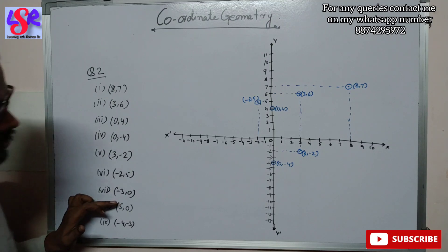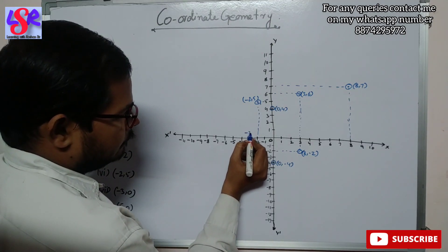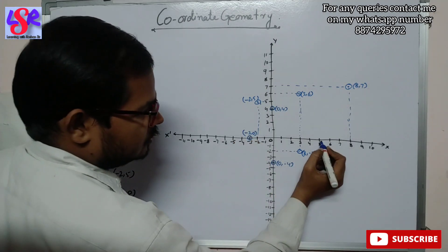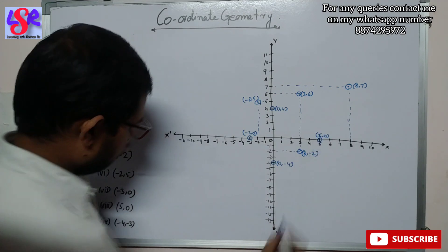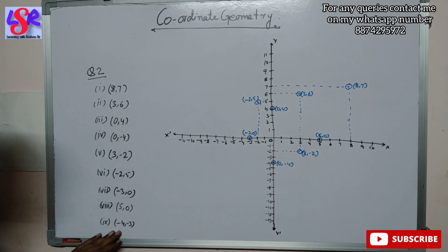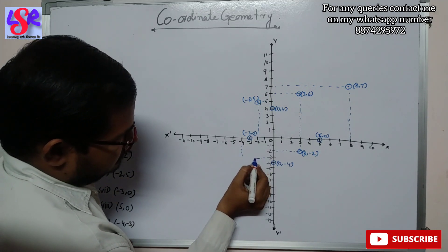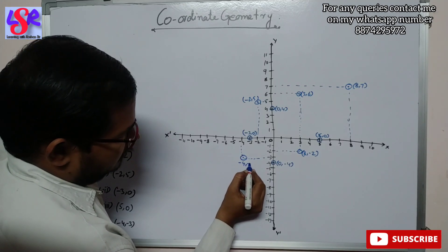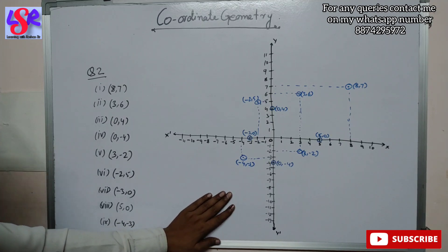Then the next point is minus 3 comma 0, so minus 3 comma 0 will be plotted over here on the negative x axis. Then we have 5 comma 0, so 5 comma 0 will be plotted on the positive x axis. The next one is minus 4 comma minus 3 — both of them are negative, so it will be in the third quadrant — and here we get the point minus 4 comma minus 3. This is the way in which we plot the points on the graph paper.